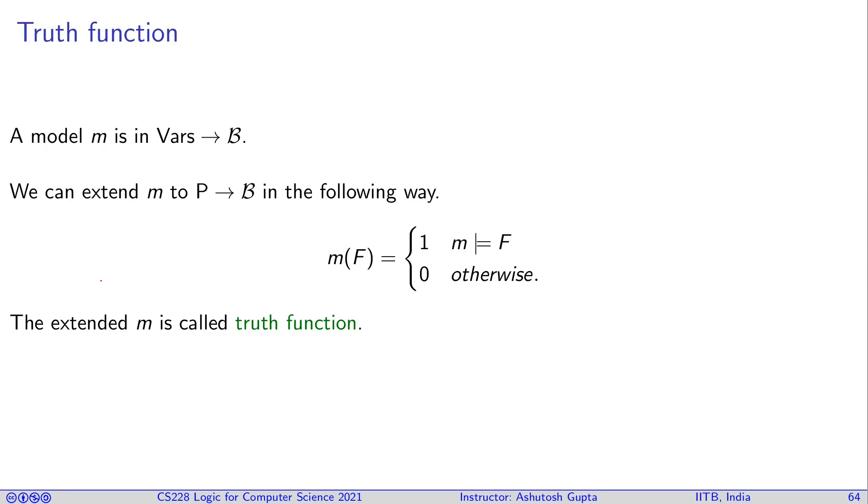Let's suppose I give you a model M. It maps every variable to a boolean value. We can extend this to assigning every formula a boolean value. If a formula is satisfied by that model M, then you say M of F is one, otherwise zero. It's a simple extension which we call truth function.